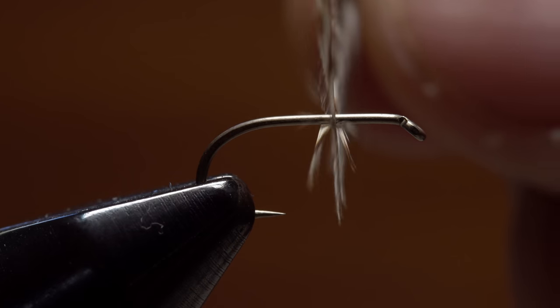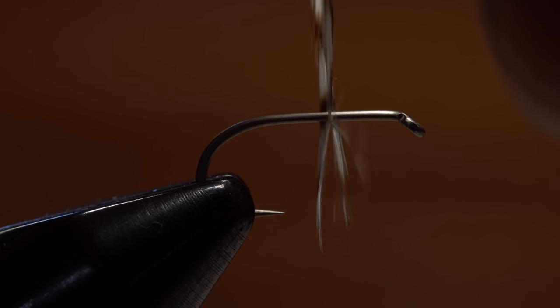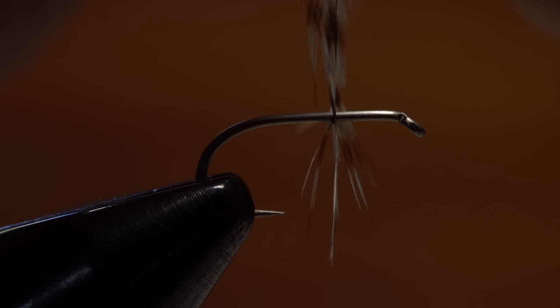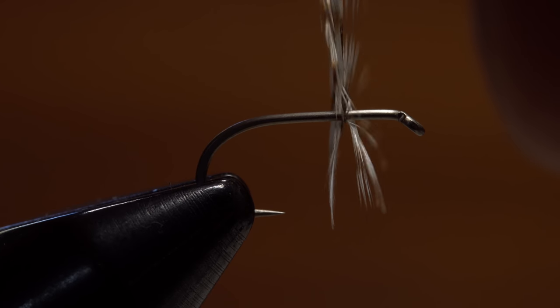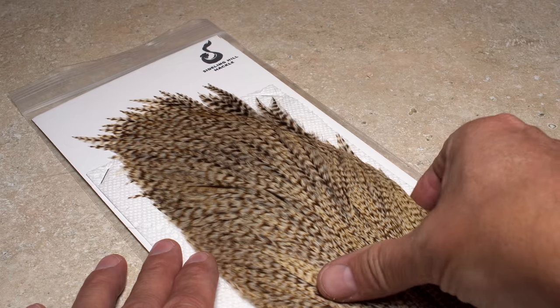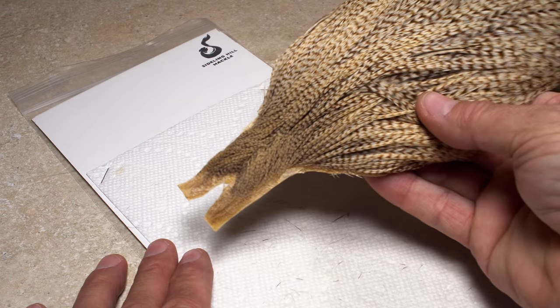You can also size directly on the hook. As with this size 14, notice the fibers are roughly one and a half times the hook gap in length—just right for a standard dry fly. In most cases, measuring is easier if the cape or saddle is removed from its card.